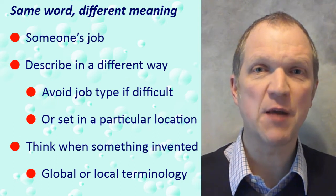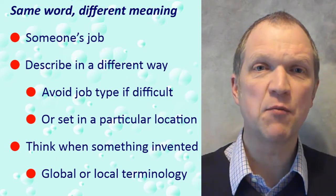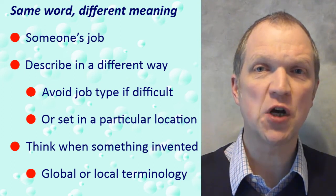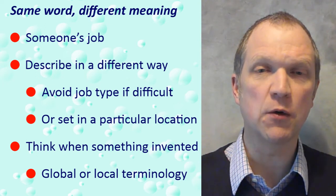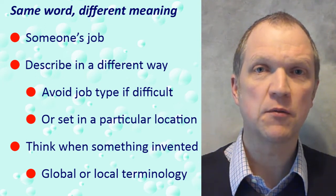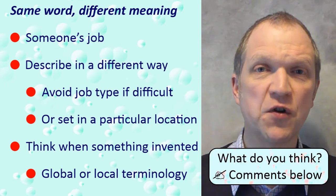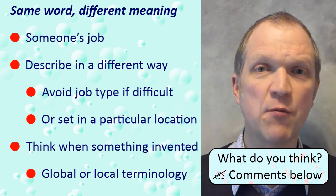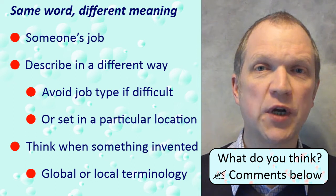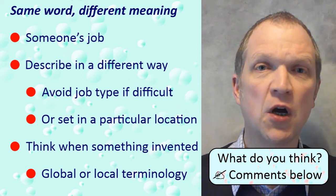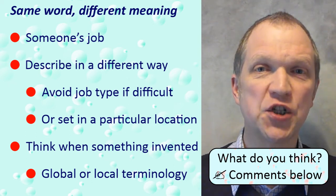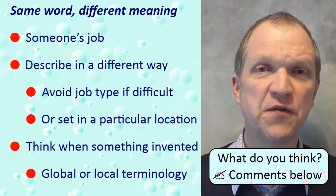So when describing something in your story's script or screenplay, take a moment to think when it was invented and whether its name or terminology is global or local. Can you think of other different words for the same objects in various versions of English? How would you get around using them? What are your preferred alternatives? Please add your suggestions to this video's comments.